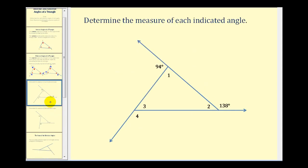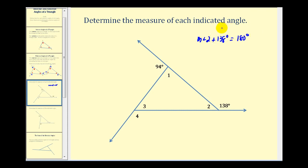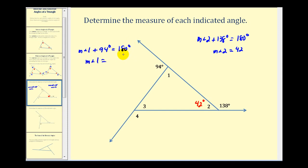Let's take a look at a couple of example problems where we determine the measure of the indicated angles. First, the sum of the interior angles of a triangle will always be 180 degrees, and the exterior angles form a linear pair with the interior angles. Looking at angle two, the measure of angle two plus 138 degrees must equal 180 degrees because they form a linear pair. Subtracting 138 from both sides, the measure of angle two is 42 degrees. Similarly, the measure of angle one plus 94 degrees equals 180 degrees, so angle one is 86 degrees.